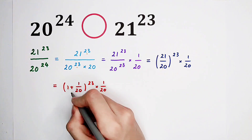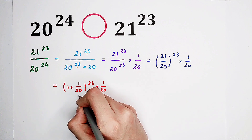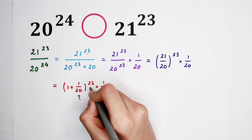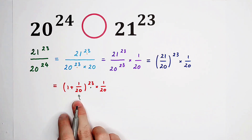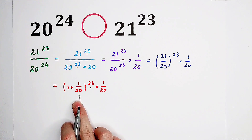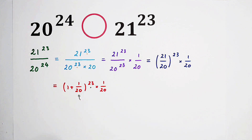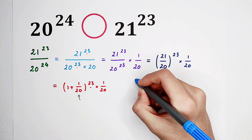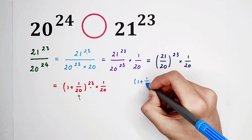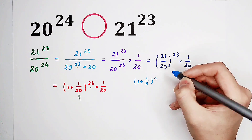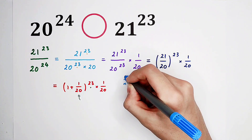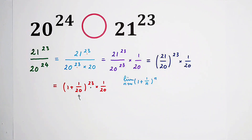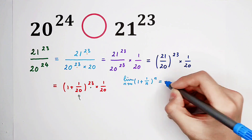Look — here is 1 plus 1 over 20, and here is 20. However, the exponent is 23. We have a form like this. We know that 1 plus 1 over n, all to the power of n, equals e as n tends to infinity.